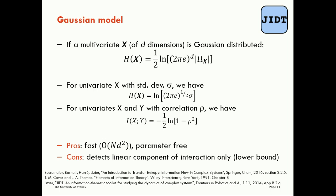We can look at a couple of simplifications of the theoretical result here. For example, for a univariate X with standard deviation σ we can write down the entropy in this way. For univariates X and Y we can compute the mutual information when they have a correlation ρ using this formula.